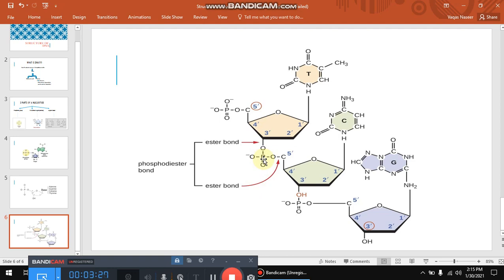One oxygen atom of the phosphate group is attached to the five prime carbon of one pentose sugar. At the same time, another oxygen atom of the phosphate group is attached to the three prime carbon of another nucleotide. In this way, a chain is formed.